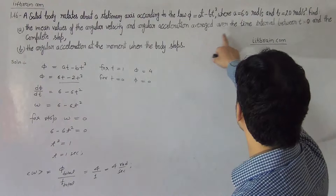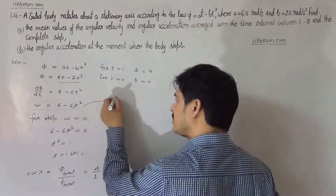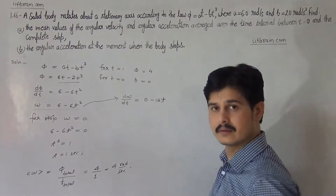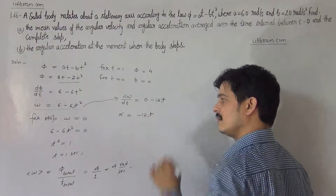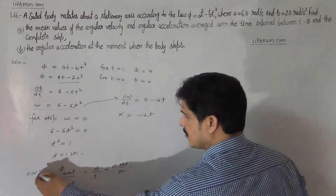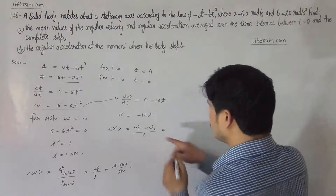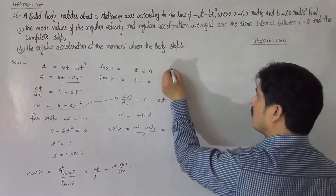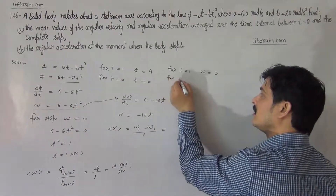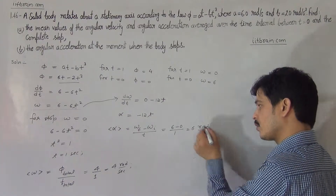Similarly, for angular acceleration averaged over the same time interval: we differentiate the expression for omega. Differentiating ω = 6 - 6T², we get dω/dt = -12T. This dω/dt is alpha, the angular acceleration. For the average, by definition, alpha average equals omega final minus omega initial divided by total time. At T = 1, omega = 0; at T = 0, omega = 6. So average alpha = (0 - 6) / 1 = -6 radian per second squared.